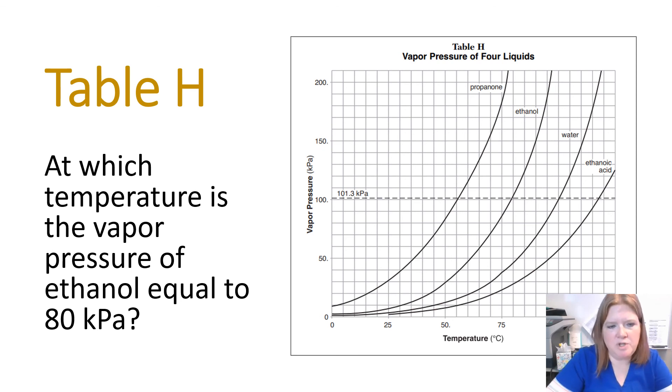At which temperature is the vapor pressure of ethanol equal to 80 kPa? So 50, I'm going up by 10s here, 60, 70. This is 80. So I'm going to go across from 80 until I hit ethanol, and I'm going to go down from that point and read the temperature, which is about 73 degrees Celsius.